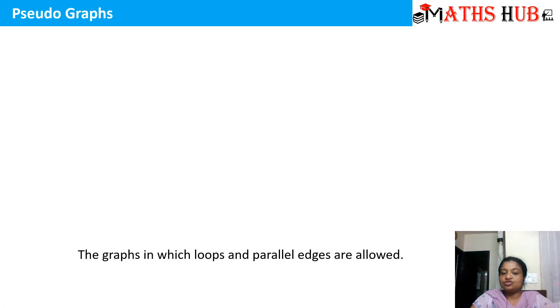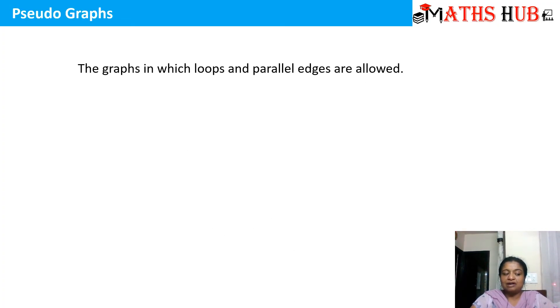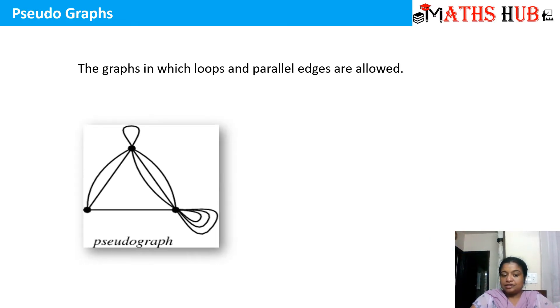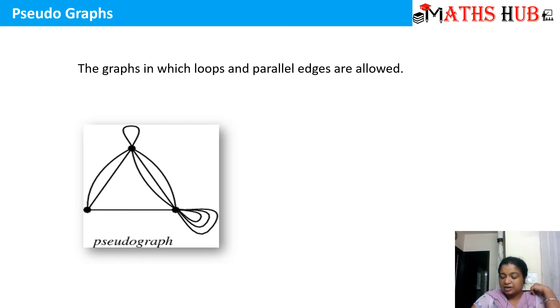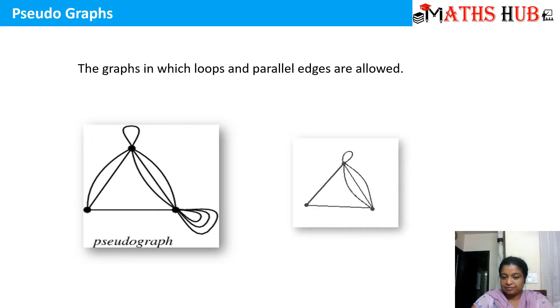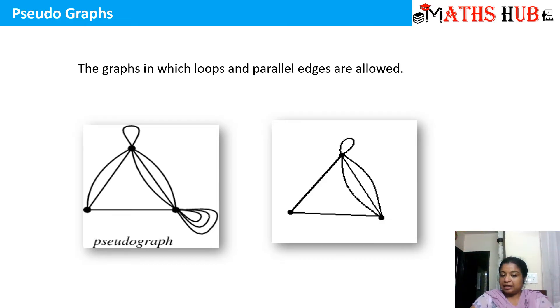Now let's come to the definition of a pseudo-graph. A pseudo-graph is a graph in which loops and parallel edges are allowed. You can see that this is an example of a graph which has both loops as well as multiple edges — also called parallel edges. This was an example of a pseudo-graph.